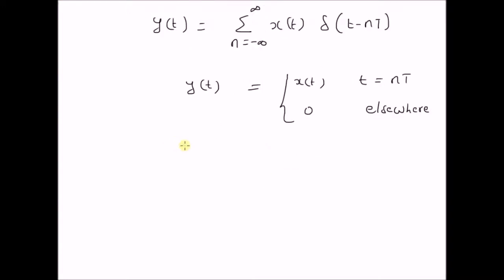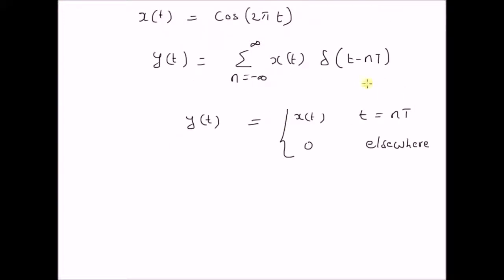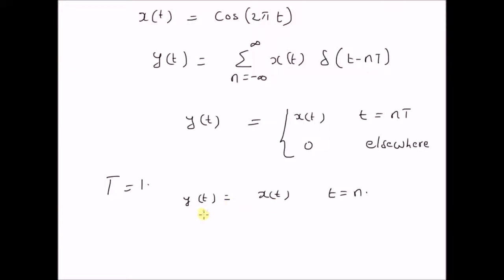Now we want to see how to calculate the sampled values, that is how to sample from this continuous signal x(t) for different values of the sampling interval T. For example, T = 1, then y(t) = x(t) for t = n. That is, whenever the time t is equal to an integer, we take the value of the signal x(t) and assign it to the output y(t), otherwise it is 0.